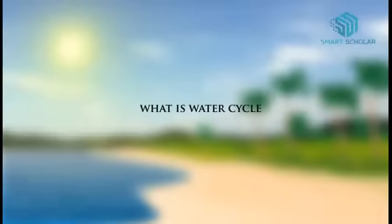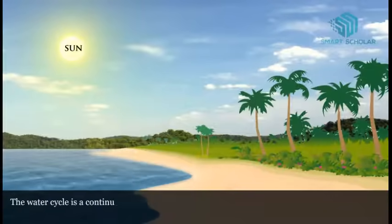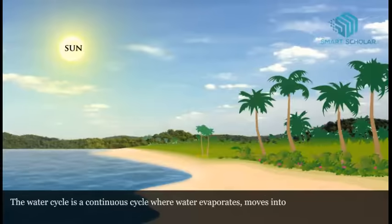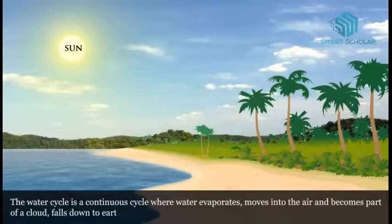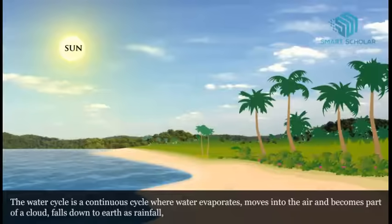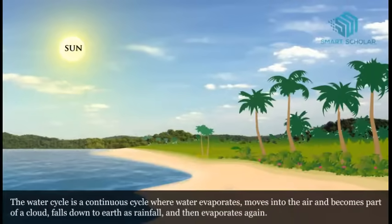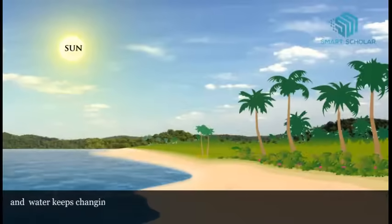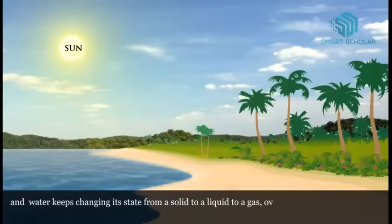What is the water cycle? The water cycle is a continuous cycle where water evaporates, moves into the air, and becomes part of a cloud, falls down to earth as rainfall, and then evaporates again. This process repeats again and again, and water keeps changing its state from a solid to a liquid to a gas.